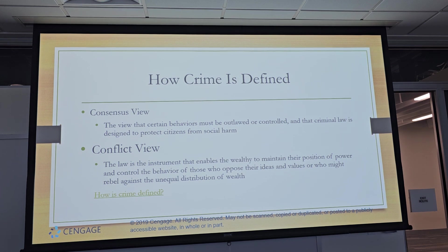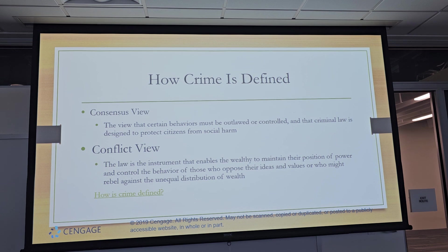The consensus view holds that certain behaviors must be outlawed and controlled, and that criminal law is designed to protect us from social harms — from those who will do us harm or cause us injury. That's the consensus: the majority, most of us and what we want. The conflict view holds that law is the instrument that enables the wealthy to maintain their position of power and control the behavior of those who oppose their ideas and values and who might rebel against them and demand equal distribution of wealth.